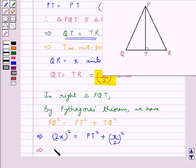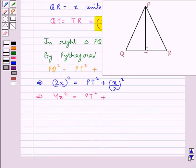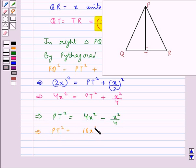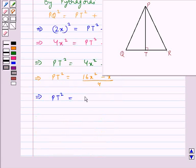which means we have 4x² = PT² + x²/4. From here we get PT² = 4x² - x²/4. This gives us PT² = (16x² - x²)/4 or PT² = 15x²/4.